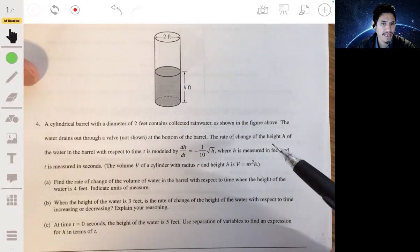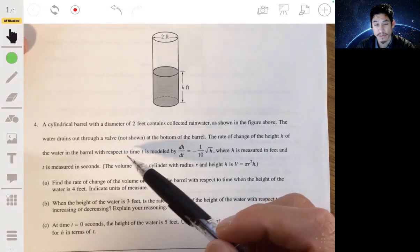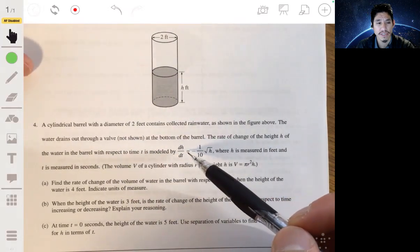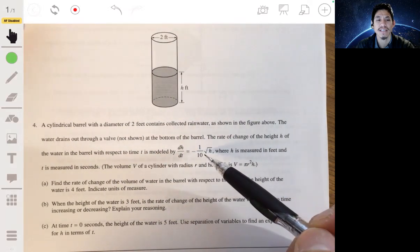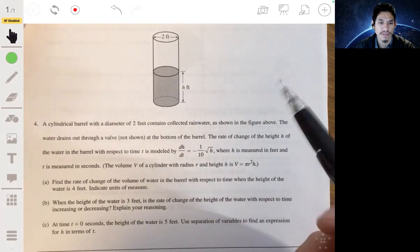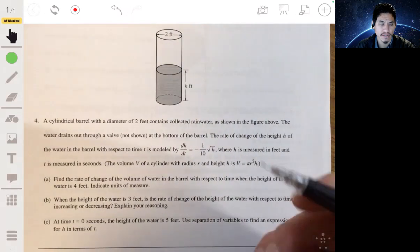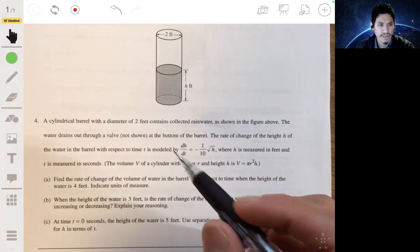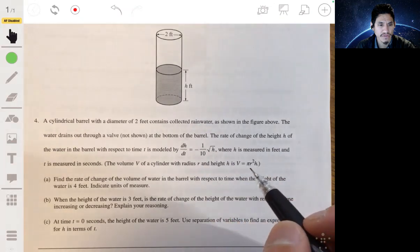The rate of change of the height h of the water in the barrel with respect to time is modeled by the equation dh/dt equals negative one-tenth square root of h, where h is measured in feet and t is measured in seconds. The volume v of a cylinder with radius r and height h is v equals pi r squared times h.